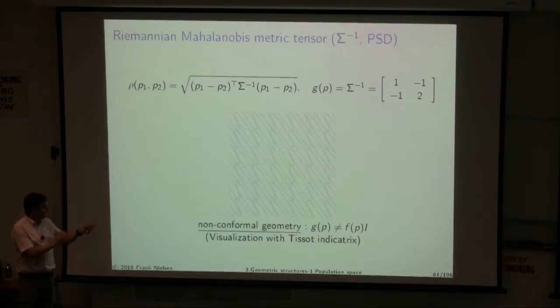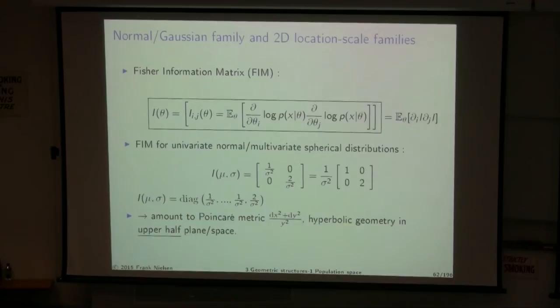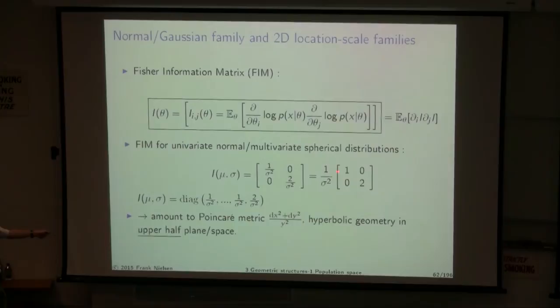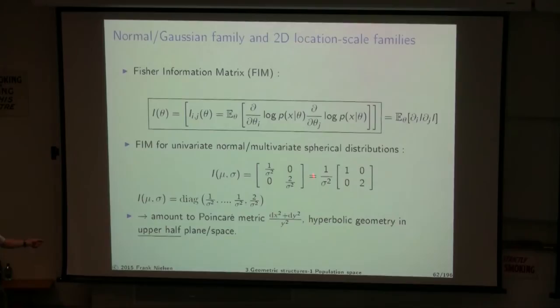Parallel transport is defined according to a connection — metric for length and orthogonality, connection for parallel transport, torsion and curvature. Geodesics are curves with constant speed. Along a geodesic you can do interpolation: given P and Q, the midpoint on the geodesic defines a mean or barycenter. In Euclidean geometry, the geodesic gives the usual linear interpolator. The covariant derivative satisfies differentiation properties, and a linear combination of covariant derivatives is also a covariant derivative.